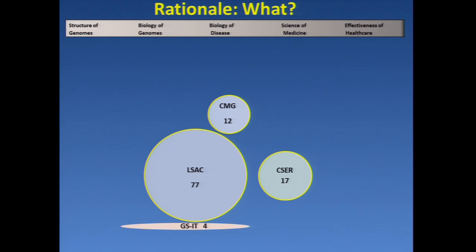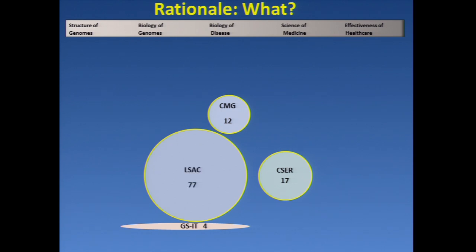These are the four components of our current program, shown as rough bubbles. The numbers in the middle are the approximate amount in millions of dollars funded in this fiscal year. Some of these funds for CSER and CMG are co-funding from NCI and from NHLBI respectively, and it's pasted up against the axis of our current strategic plan. There are also other programs going on in NHGRI that are closely or more distantly related, and in the spirit of being proximate, I want to show them.